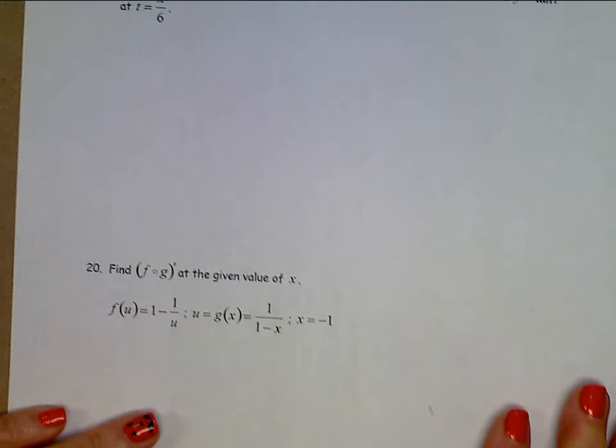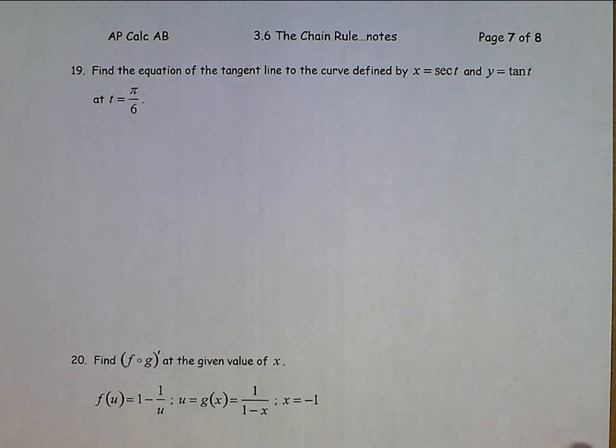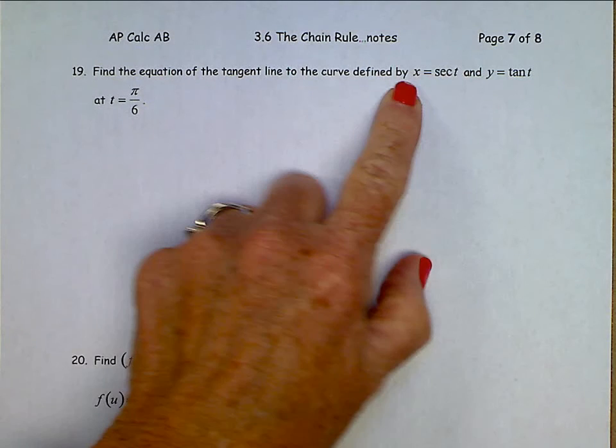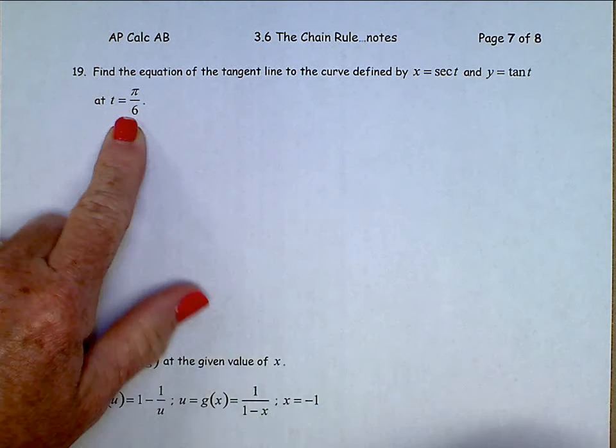Section 3.6, Chain Rule, page 7. We want to find the equation of a tangent line to the curve defined by x equals secant t and y equals tangent t at t equals pi over 6.